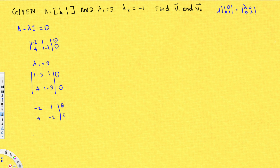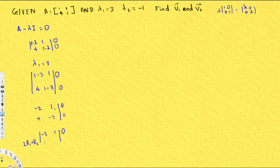Now I perform Gauss-Jordan elimination. If I multiply the first row by 2 and add it to the second row (2R1 + R2), the second row becomes 0. Negative 4 plus 4 is 0, and 2 plus negative 2 is 0. So the matrix reduces to [-2, 1; 0, 0]. This means the second column is my free variable since the first column is the pivot column.